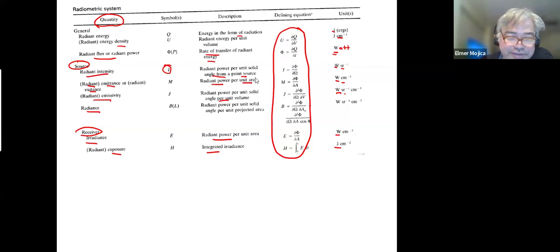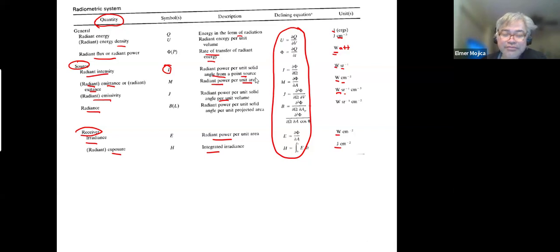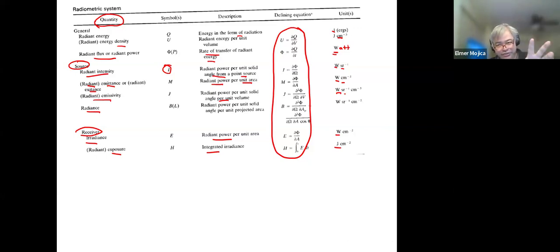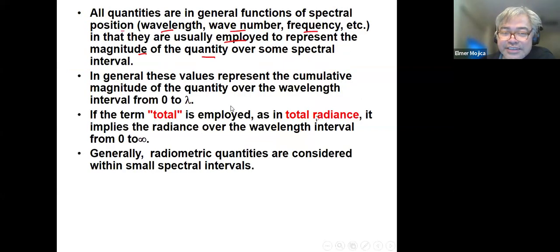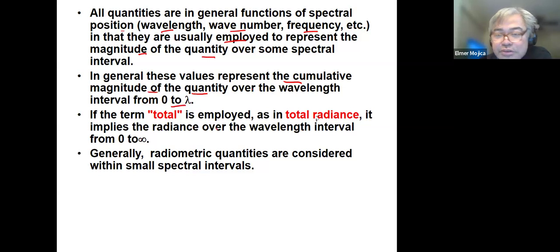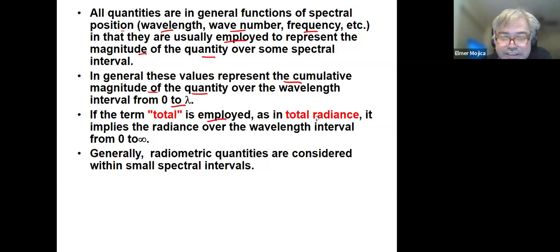I just skipped the defining equation part, but just to let you know: the two approaches are radiometric and photometric, and within those two approaches there are still a lot of quantities. These values represent the cumulative magnitude of the quantity over the wavelength interval from zero to lambda. If the term 'total' is employed — as in total radiance — it implies that the radiance spans the wavelength interval from zero to infinity.